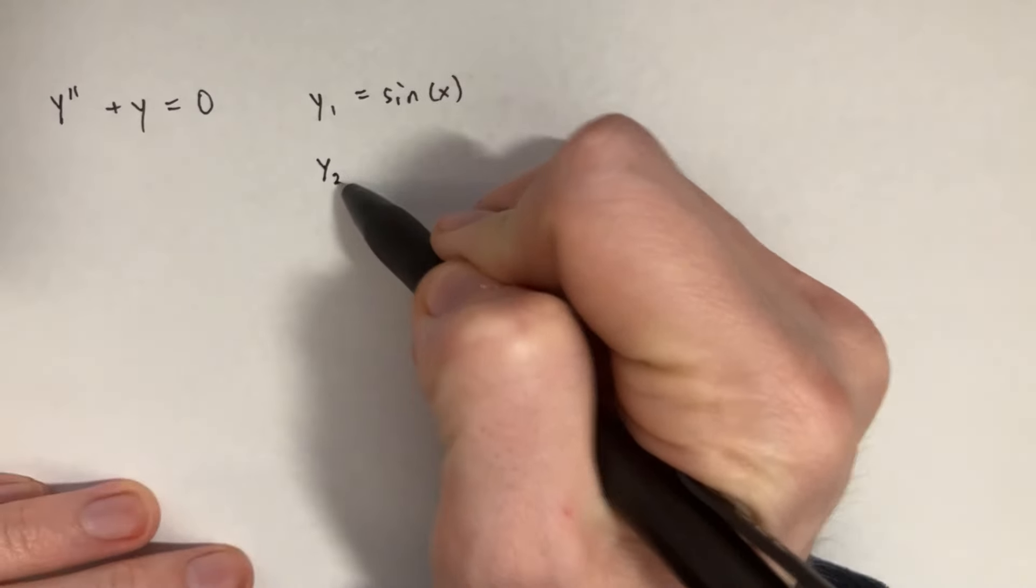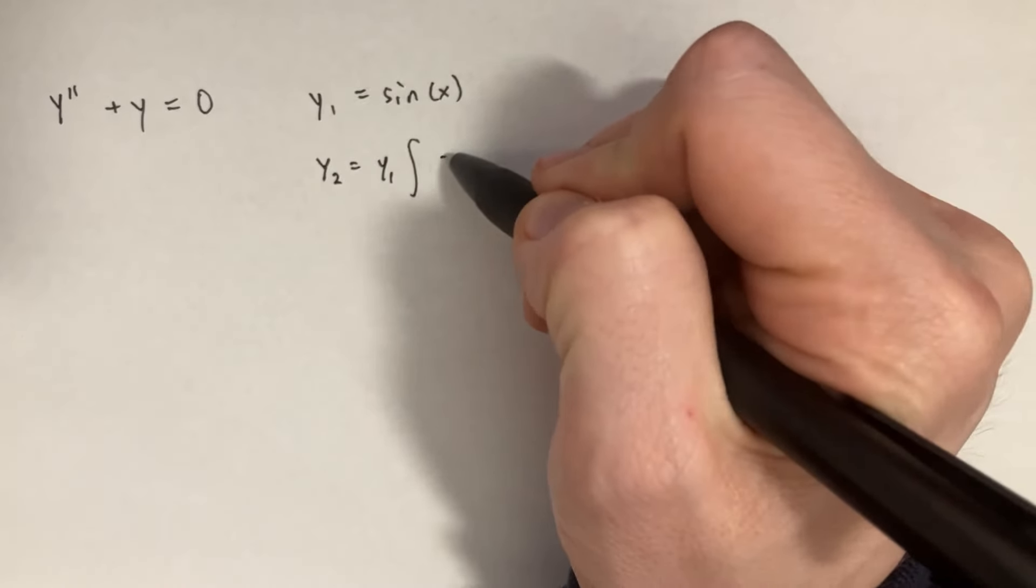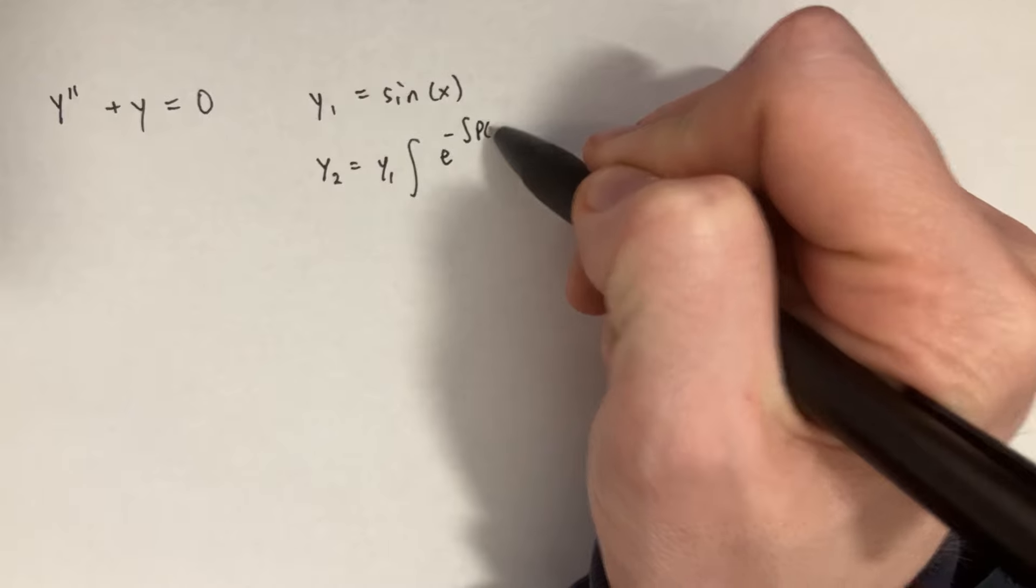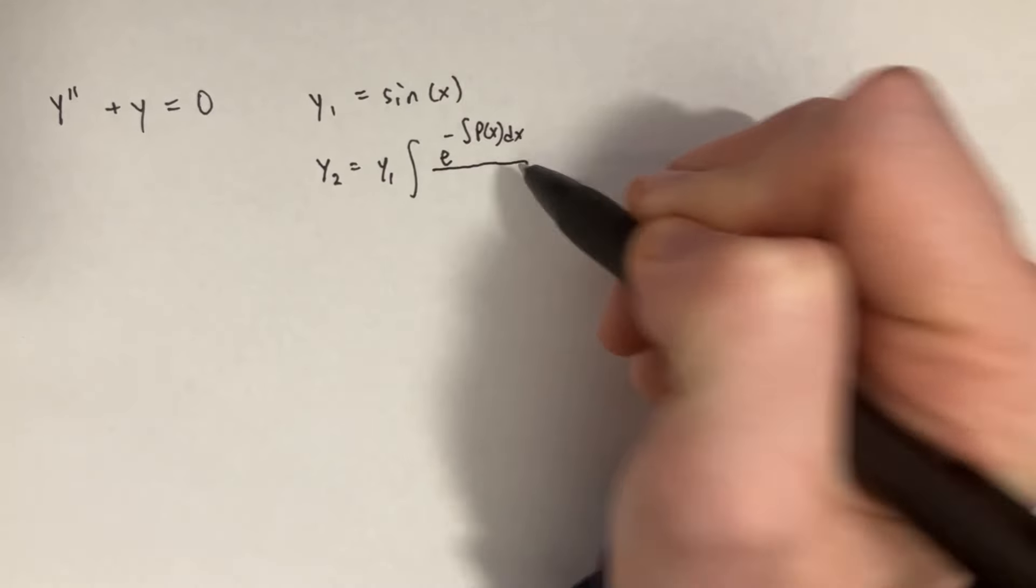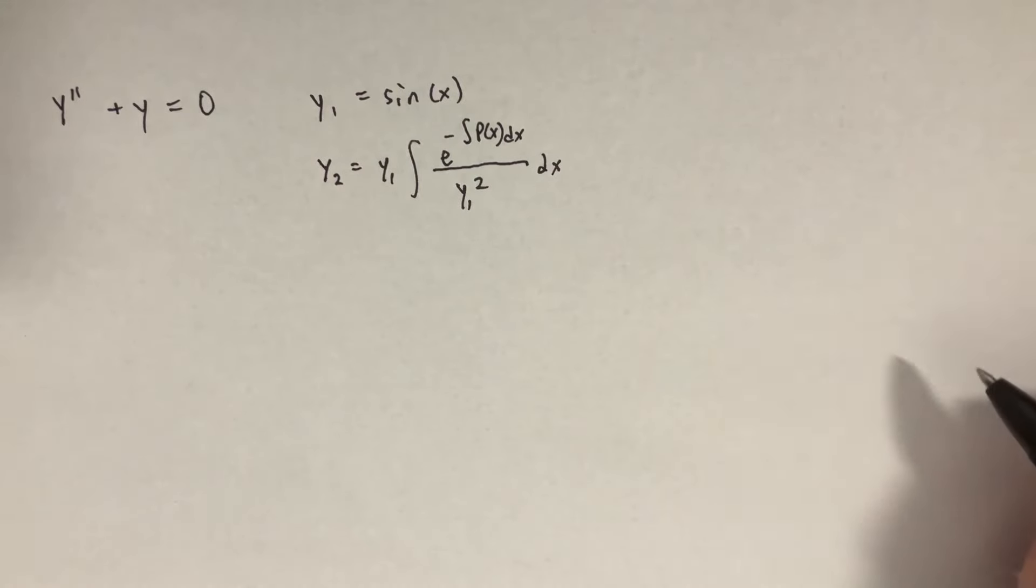Here's an interesting second order differential equation that we can solve using a reduction of order technique. We can actually jump straight to an answer if we do y2 equals y1 integral of e to the negative integral p of x dx divided by y1 squared, and then this is all just integrated with dx.